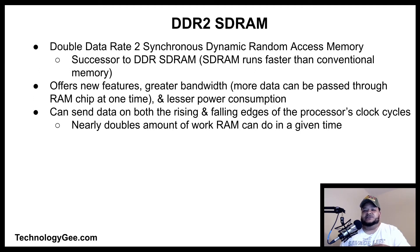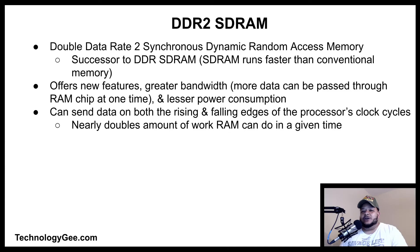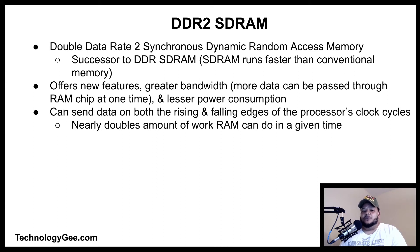DDR2 SDRAM — double data rate 2 synchronous dynamic random access memory — is the successor to DDR SDRAM. It offers greater bandwidth, where more data can be passed through the RAM chip at one time, and lesser power consumption than its predecessor. Like standard DDR memory, DDR2 can send data on both the rising and falling edges of the processor's clock cycles, nearly doubling the amount of work the RAM can do in any given amount of time.